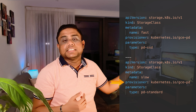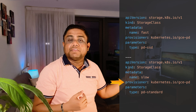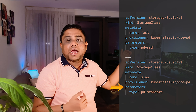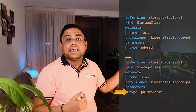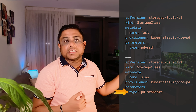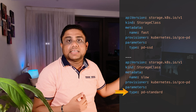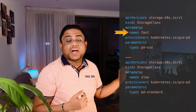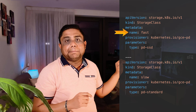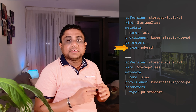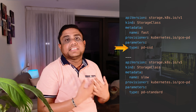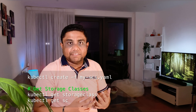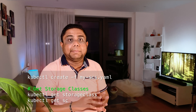Under the provisioners I'm defining what my provisioner is. Here I'm on Google Cloud Platform, so I'm using GCE PD as the provisioner. Under the parameters, if I need to provision volumes with the slow storage class I use pd-standard, which will use hard disk storage. For the fast storage class I use pd-ssd, which means it will be backed by SSD storage.